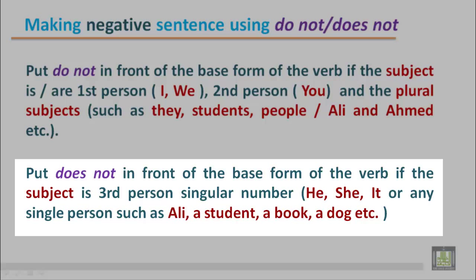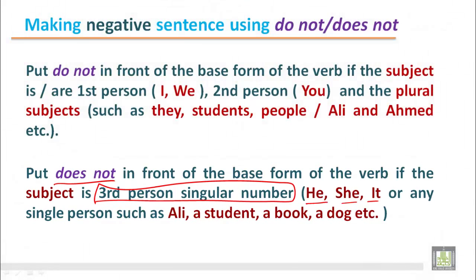Put does not in front of the base form of the verb if the subject is third person singular number. These subjects can be singular — he, she, it — or any single person such as Ali, a student, a book, or any animal like a dog, a cat. Many things can be a singular subject.